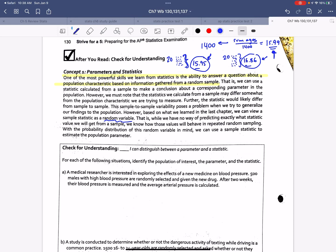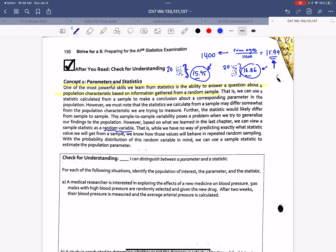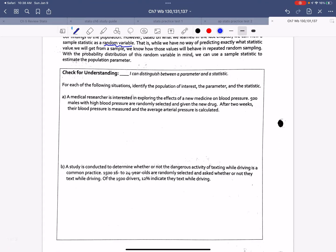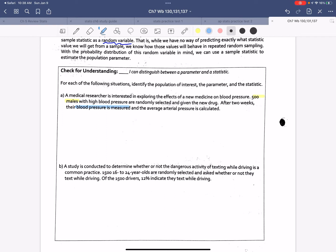Every once in a while, I'll get a really young class or a really old class, but I probably won't get an average of 20 classes to be really big or really small because each of these numbers are an average of an average. So it says, for each of the following situations, identify the population of interest and the parameter of the statistics. Medical research is interested in exploring the effects of a new medicine on blood pressure. 500 males with high blood pressure are randomly selected and given a new drug. After two weeks, their blood pressure is measured and their average arterial pressure is calculated.